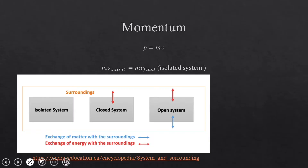Momentum is equal to mass times velocity, measured in kg·m/s, which is the same as 1 newton second. In an isolated system, initial momentum equals final momentum — conservation of momentum. In an isolated system there is no exchange of matter or energy with surroundings. In a closed system there is exchange of energy but not matter, and in an open system there is exchange of both energy and matter.